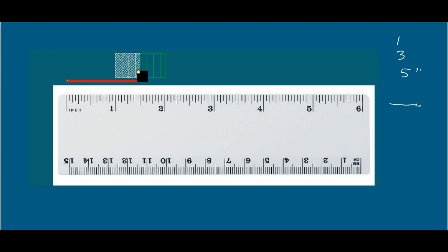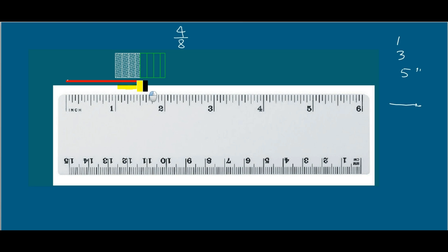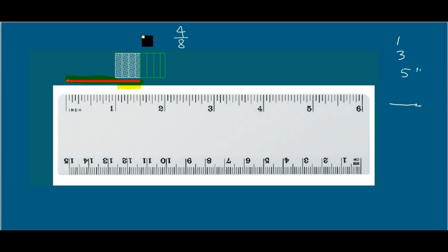For this box, the total divisions are eight, so we write eight as the denominator, and the shaded part is four, so we write four as the numerator. This portion of the line — from here to here — is represented by four-eighths, and the one-inch portion is represented by 1. So the length of this line is 1 and four-eighths inches.